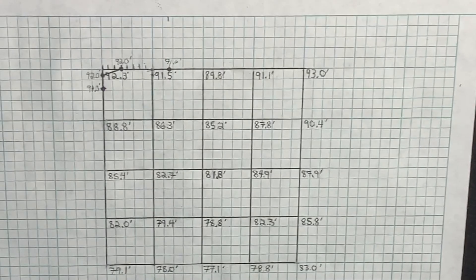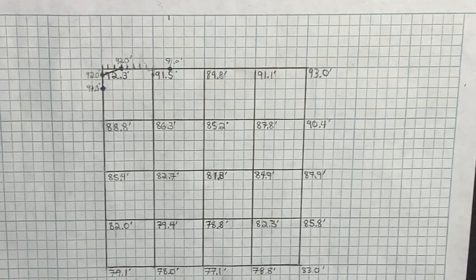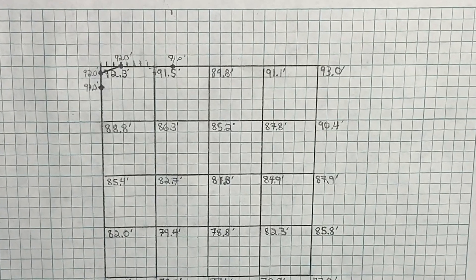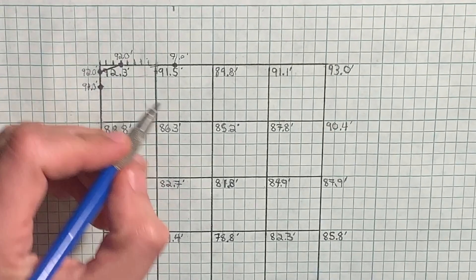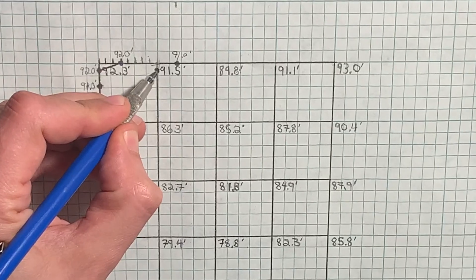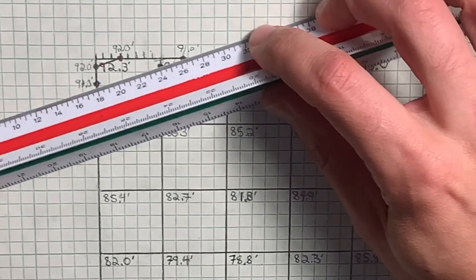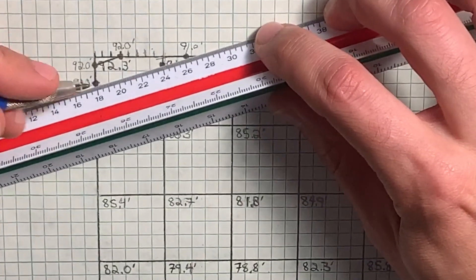Now, before connecting the two 91-foot contour points, there is still one more point to obtain, the vertical one in between. So, we'll just go ahead and fast forward and plot that point so that we can now connect our second contour line.